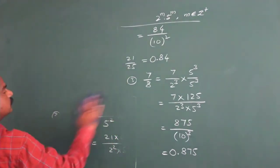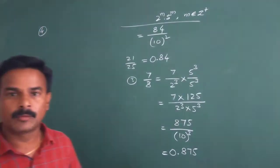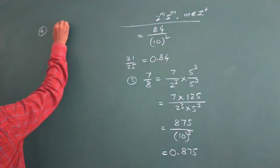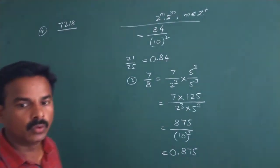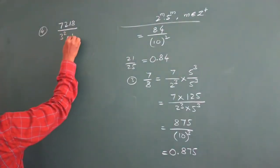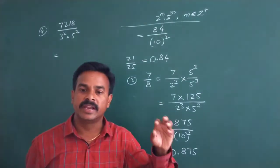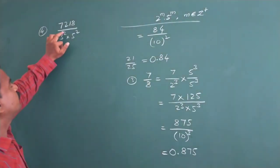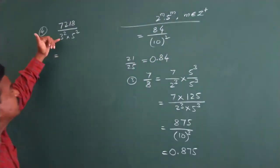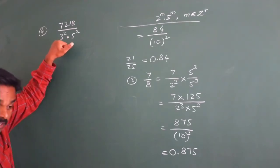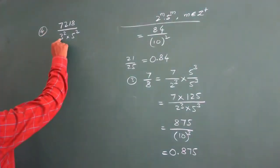Let us take one more example — the fourth example. I am going to take 7218 divided by 3 to the power of 2 into 5 to the power of 2. First, we have to observe whether the given fraction is in its simplified form or not. In the denominator we have 3 to the power of 2 into 5 to the power of 2, and we need to change this into 2 to the power of M into 5 to the power of M. But there is a 3 to the power of 2 factor in the denominator.